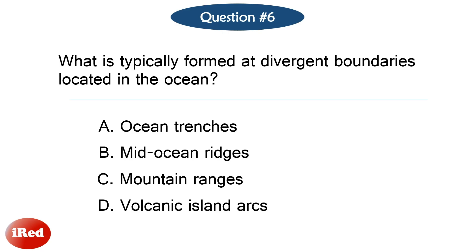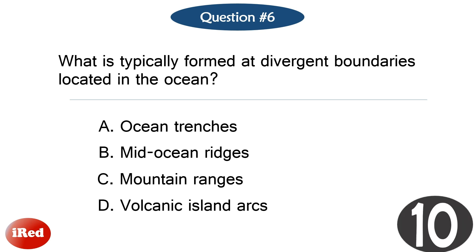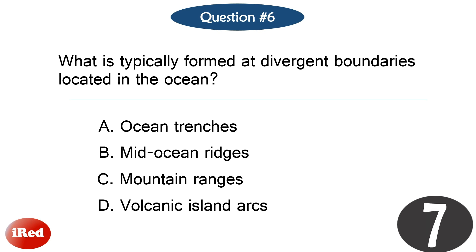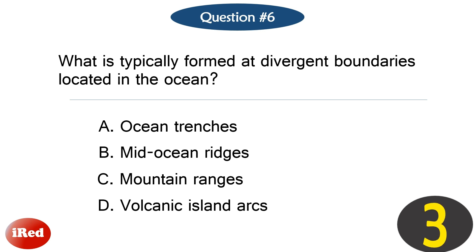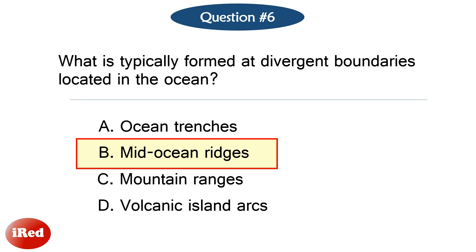Question number six. What is typically formed at divergent boundaries located in the ocean? The correct answer is letter B: mid-ocean ridges.